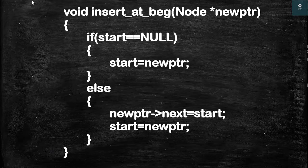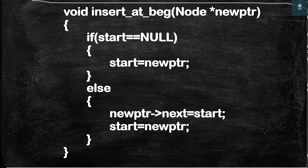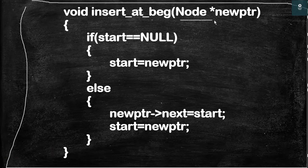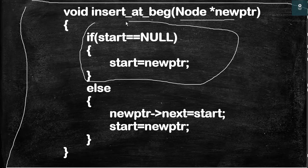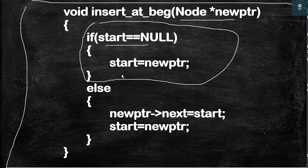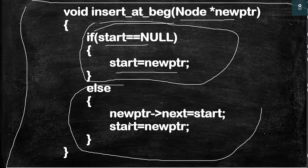Here is the function to insert a node at the beginning of a linked list. The function takes one argument of type node pointer. The if part handles the empty list case: if start is equal to null, we make start equal to newptr. The else part handles the non-empty case: newptr->next is equal to start, then start is equal to newptr. In this way we can insert a node at the beginning of a linked list.